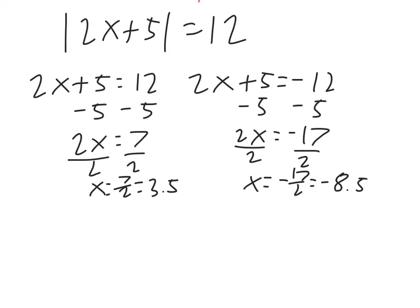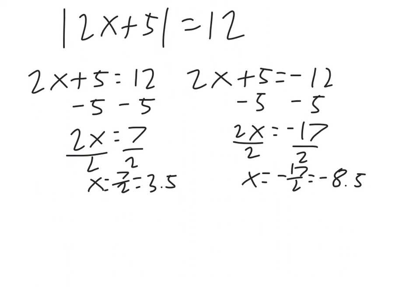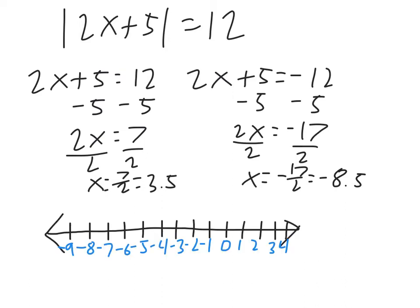Now we need to graph it. So we make our number line and plot our points. So first we have 3.5, which is halfway between 3 and 4, about right there, and negative 8.5, which is halfway between negative 8 and negative 9, which is about right there, and that's all you do.